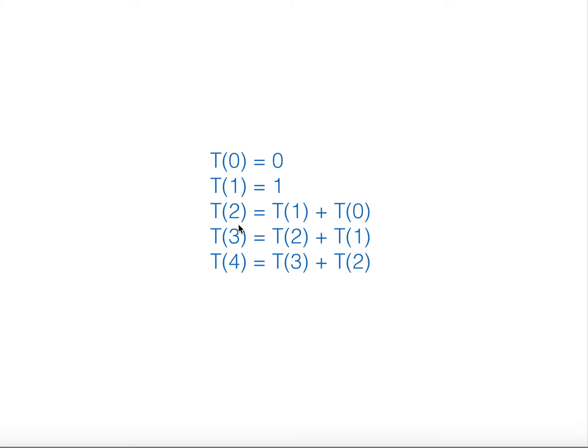That's called recurrence — that's how nature behaves. To find T(3) we need T(2) and T(1), but notice that when computing T(3) and T(2) we repeat the computation of T(1) again and again. This is called overlapping subproblems, and it's inefficient — we need to find a way to solve it.